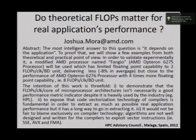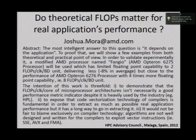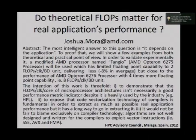The proposal of this talk is to demonstrate, first, that the flops per clock for a core of microprocessor architectures — not necessarily only AMD, it can be Intel or ARM or whatever — isn't necessarily a good performance metric indicator, despite being heavily used by the industry, like when you run the Linpack benchmark. Also, it will expose that code vectorization technology of the compilers is fundamental in order to really extract performance. But we cannot blame compiler technology alone — there is a real problem in the design of algorithms to exploit those architectures as well.